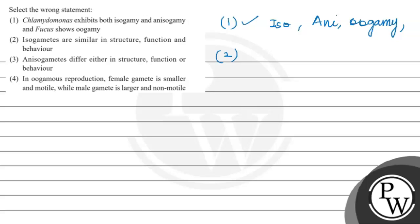Next, we said that isogamy is similar in structure, function and behavior, which is correct. In the third option, anisogamy is different in structure, function or behavior. In one or another aspect, you will find differences between the male and female gametes. So this is correct.